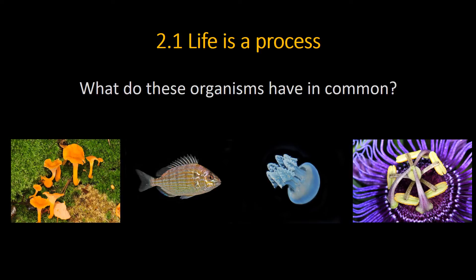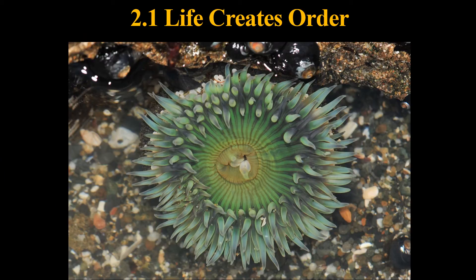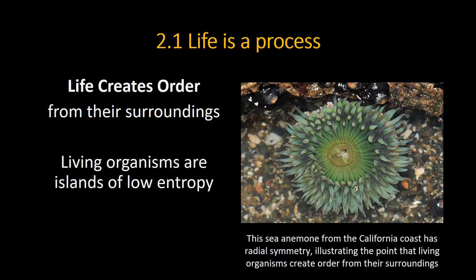So, starting off — what do these organisms have in common? What do they all have to do? Almost every one of us comes up with: well, they have to reproduce. But I've never reproduced. Does that mean I'm not alive? I like to think that I'm alive, even though I don't have any kids. Here's the most important thing: life creates order. Life takes energy from its environment and uses that energy to create order. This sea anemone from the California coast has radial symmetry, lots of complex molecules, lots of DNA storing information. The water around it is completely disordered — high entropy. The living organism is low entropy. Life uses energy to create order, so we can say that life is an island of low entropy.